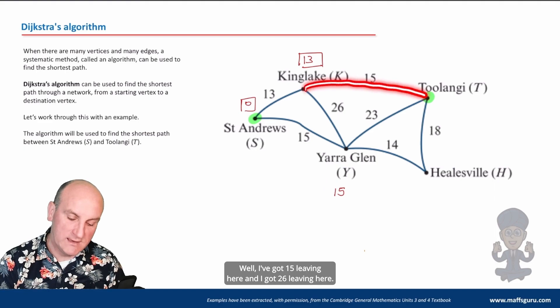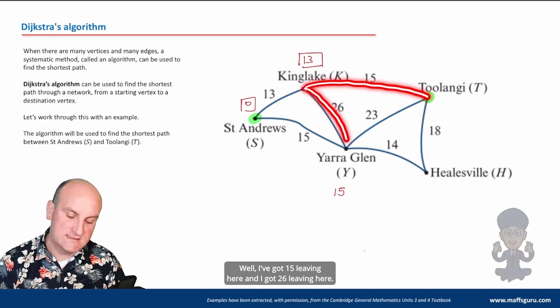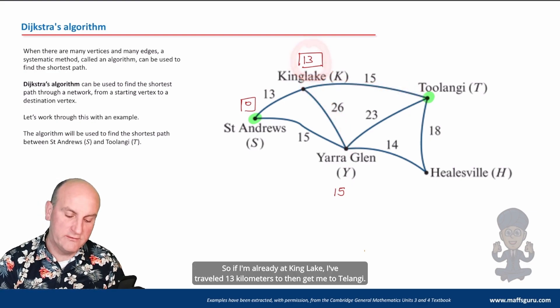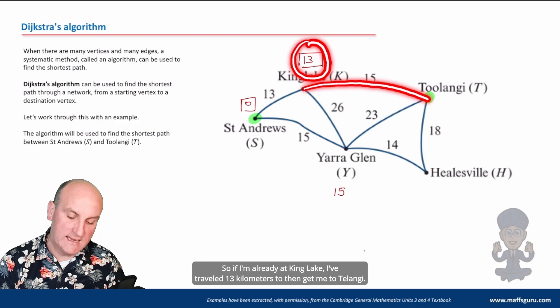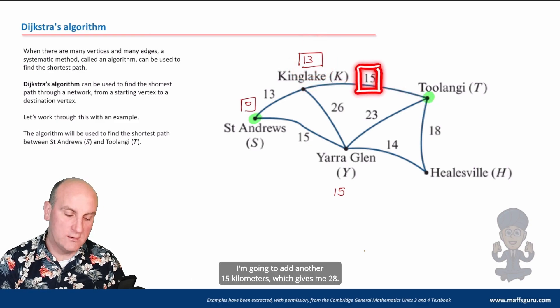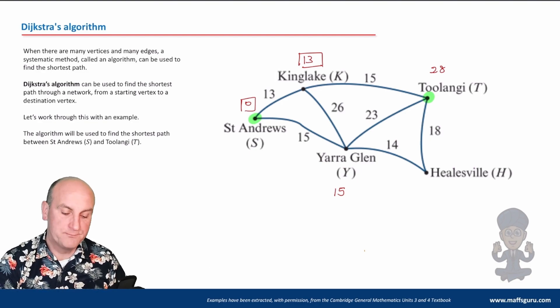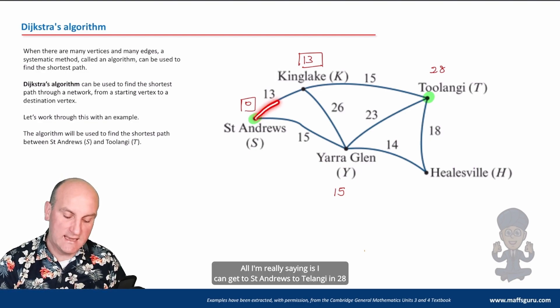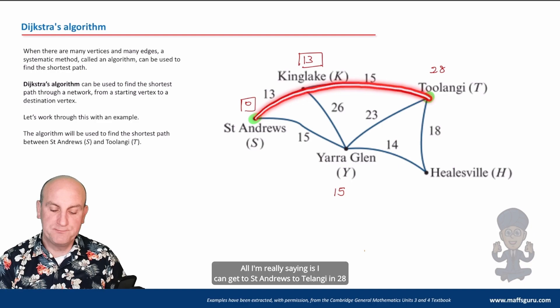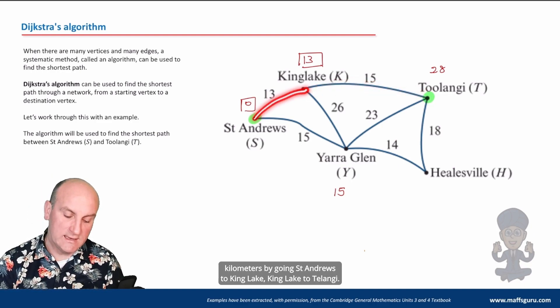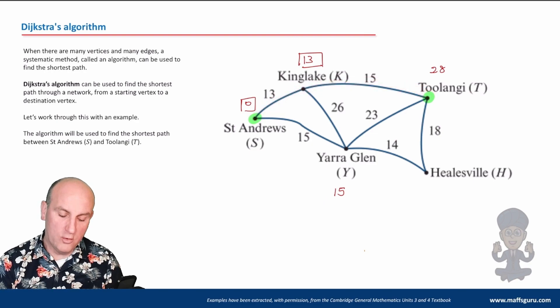And I'm going to look again and say, well okay, where are all the roads leaving Kinglake? Well I've got 15 leaving here and I've got 26 leaving here. Oh okay, so if I'm already at Kinglake, I've traveled 13 kilometers. To then get me to Toolangi, I'm going to add another 15 kilometers, which gives me 28. So I'm going to put a 28 in a box there. Why? All I'm really saying is I can get from St Andrews to Toolangi in 28 kilometers by going St Andrews to Kinglake, Kinglake to Toolangi.